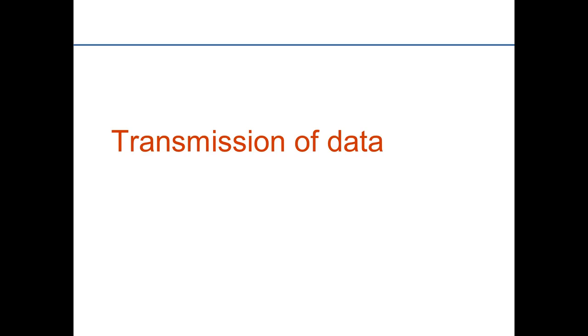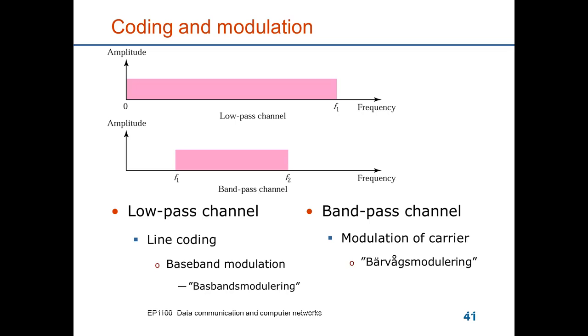We have two examples called coding and modulation. If you have a low-pass channel, which permits frequencies from zero up to some maximum limit, you can use something called line coding to carry the data, or it's also referred to as baseband modulation. It's basically a direct current, or a continuous light signal, that is being modulated to carry the data. If you instead have a bandpass channel, then you need a carrier signal that lies somewhere in the passband, and you modulate that in order to carry the data. These are the two principles that I will show you.